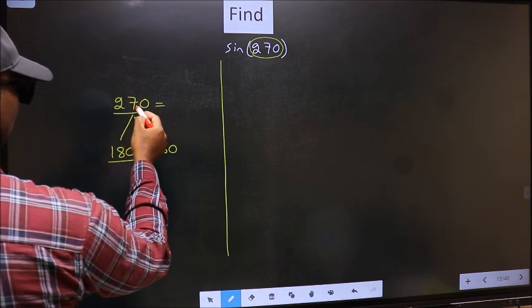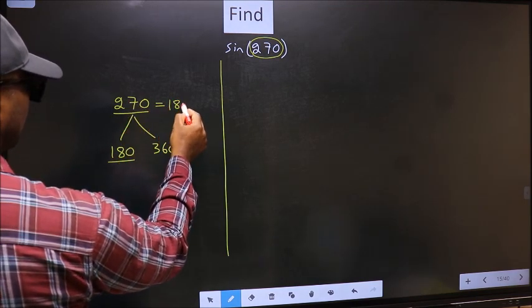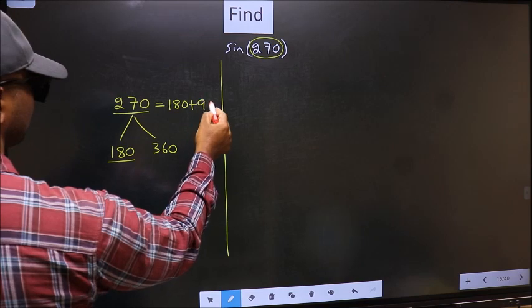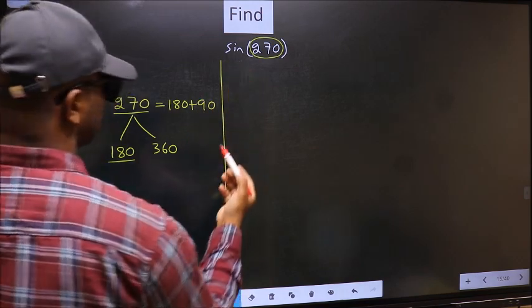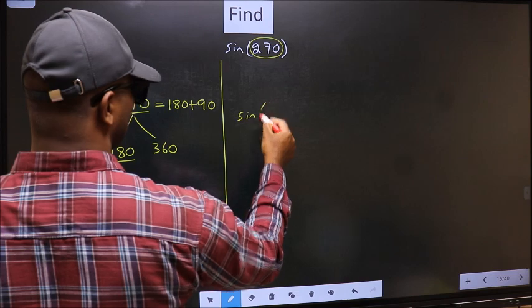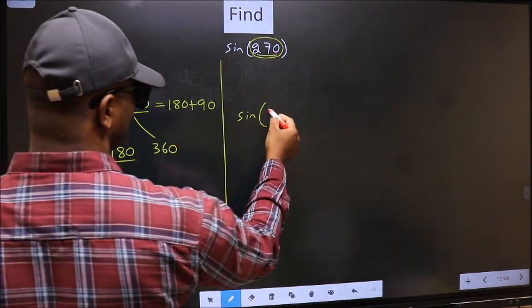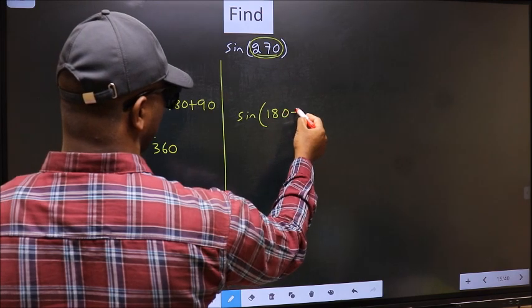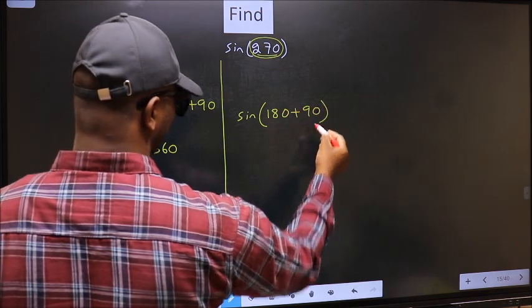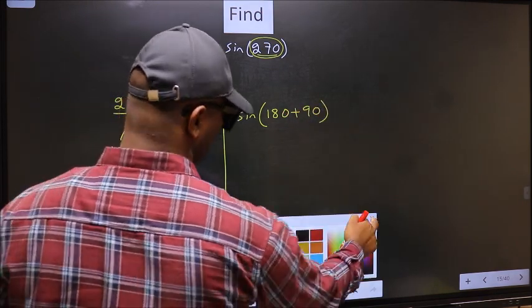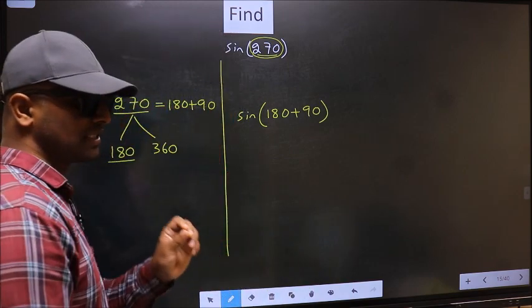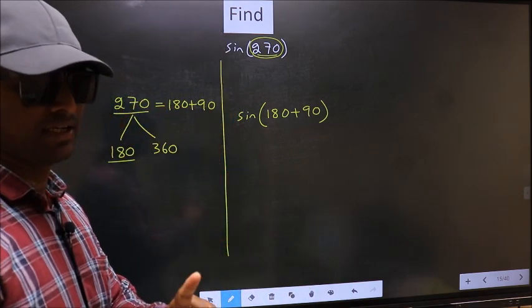Then 270 now should be written as 180 plus 90. So this will become sine in place of 270. Now we should write this: 180 plus 90. This is your step 1. Next.